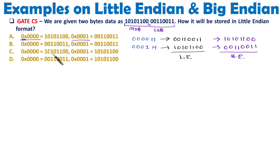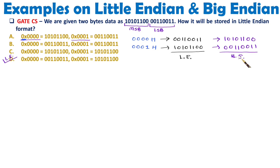The question is based on little-endian, so the correct option is: at address 0x0000, data is 00110011, and at address 0x0001, data is 10101100. For big-endian, at the lower address we store 10101100, and at address 0001 hex we store 00110011. Since the question asks about little-endian, that is our correct option.